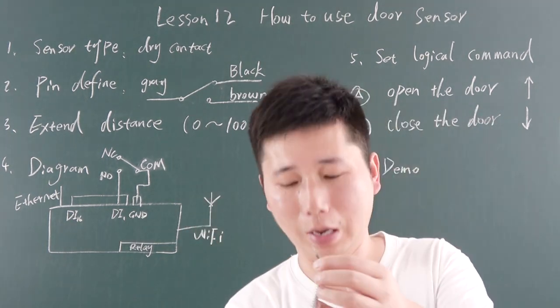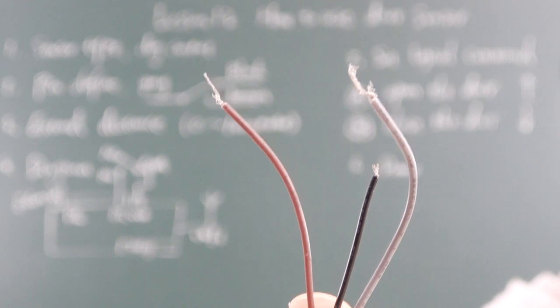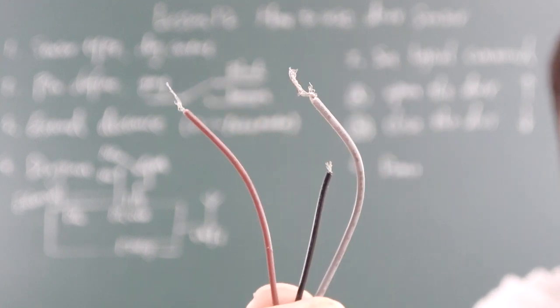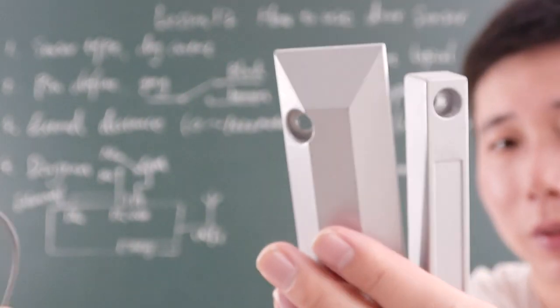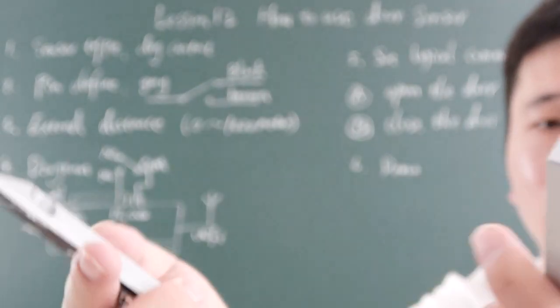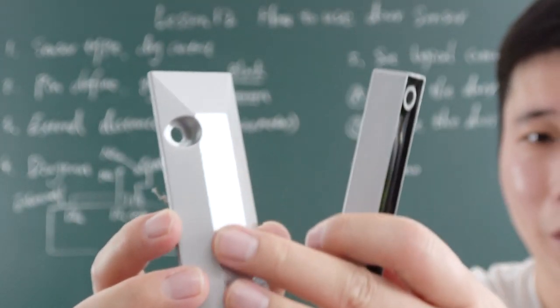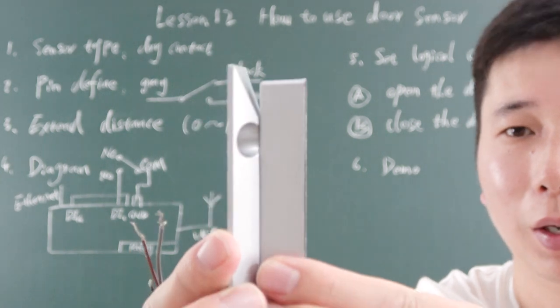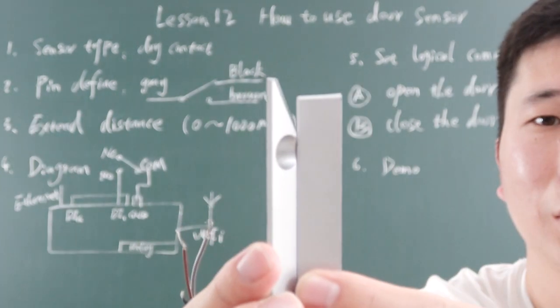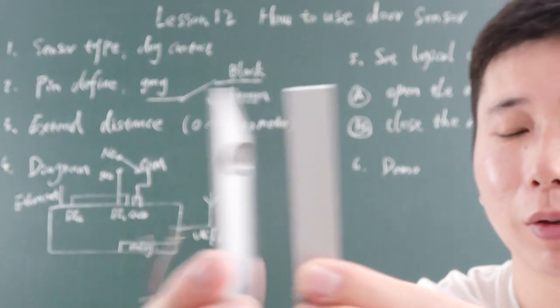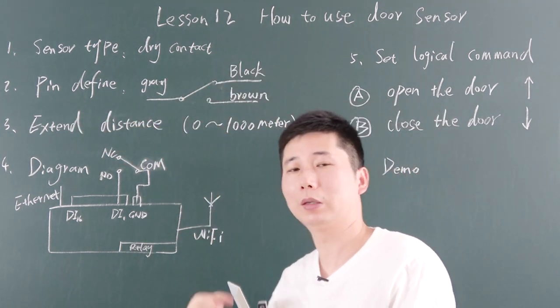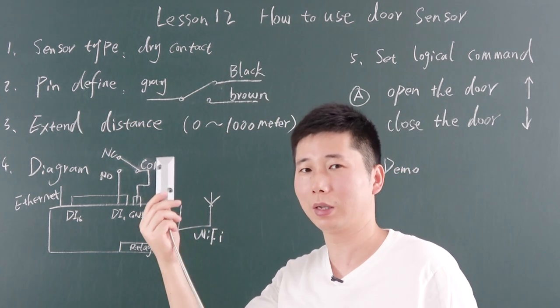You can see this sensor has three lines. The green is COM, and the black and brown are normal open and normal close. This is the signal output from the door sensor. These two parts have magnetic components inside. So this can detect door open and door close. This is the pin define — just three lines, easy to understand.